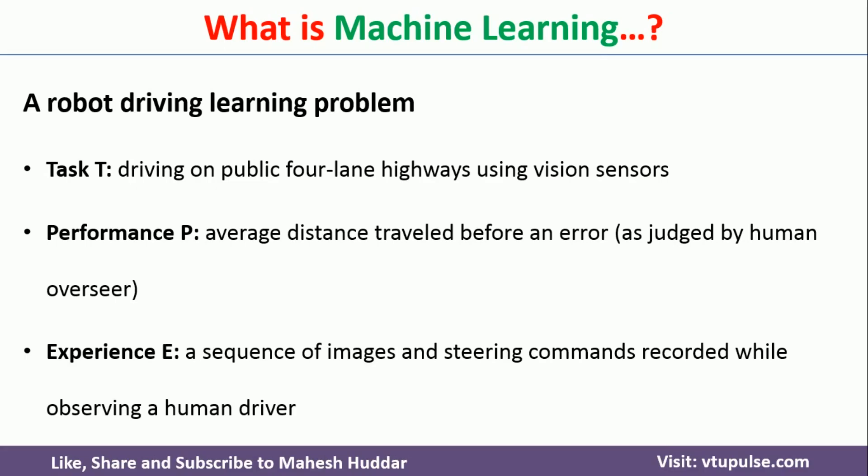Initially, if you train that particular robot with some driving experience, it may make some mistake after a certain distance. But if you go on training that robot again and again, the average distance travelled before it makes an error will be more. So definitely it will learn through experience in this case.